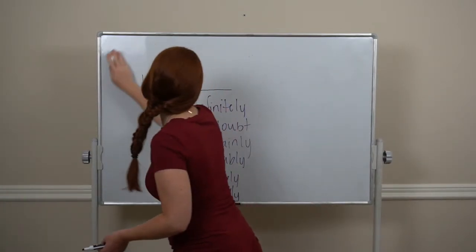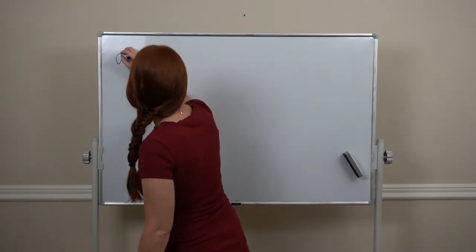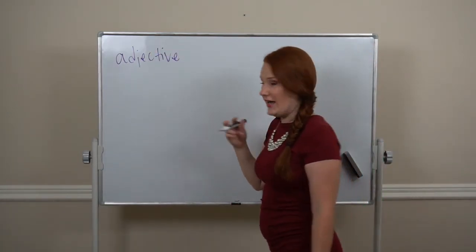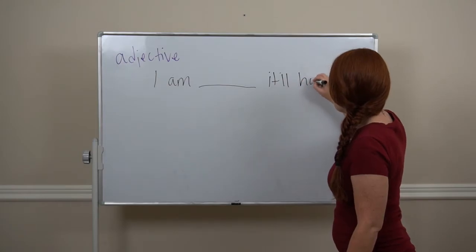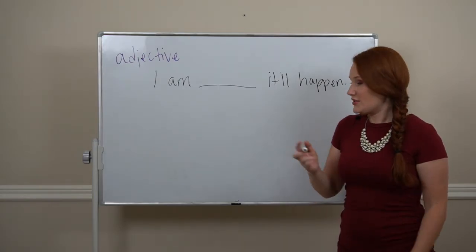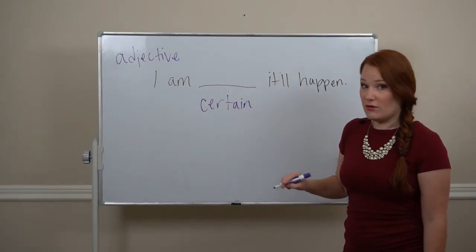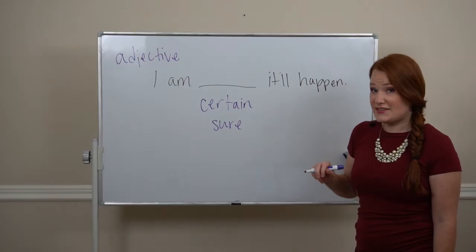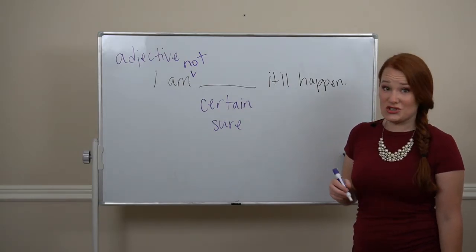Adjectives. If we say I, we're talking about I. So we'll use some adjectives to describe how confident I am. So I can say I'm certain it'll happen, or I'm sure it'll happen. And these are both pretty confident. To make these ones negative, we'll put not after am. I am not certain it'll happen. I am not sure it'll happen.